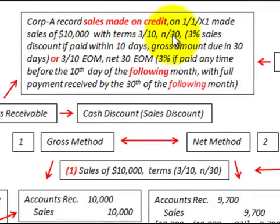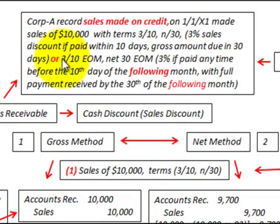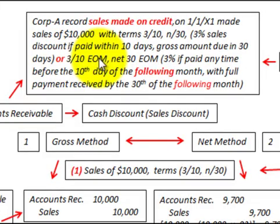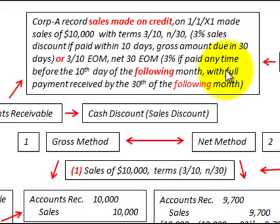The terms are three/ten net thirty — that means a three percent sales discount if paid within ten days, and the gross amount is due in thirty days. It may also be stated as three/ten EOM, net thirty EOM. EOM stands for end of month, meaning a three percent discount if paid before the tenth day of the following month, with full payment due by the thirtieth of the following month.